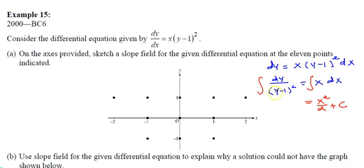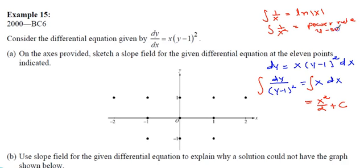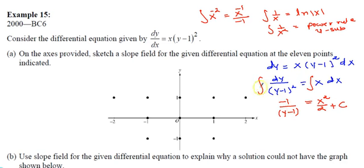For the antiderivative of (y-1)^(-2), recall that you only get ln|x| when the power is 1. Otherwise, use the power rule with u-substitution. Let u = y-1, so du = dy. Applying the power rule to u^(-2) gives u^(-1)/(-1), so the result is -1/(y-1). The antiderivative of (y-1)^(-2) is -1/(y-1).